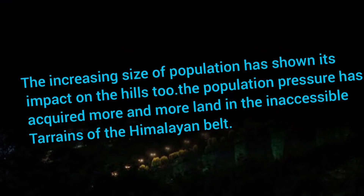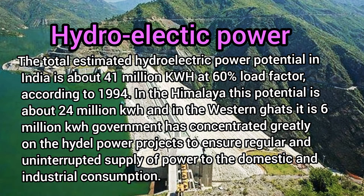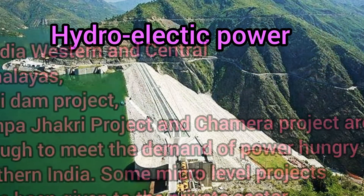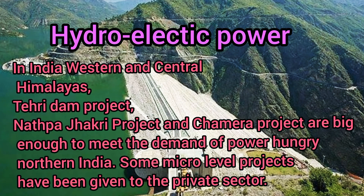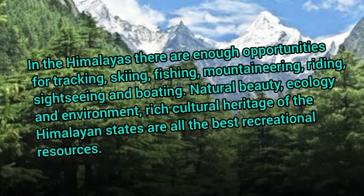The increasing population has shown its impact on the hills, acquiring more and more land in the inaccessible terrain of the Himalaya. In India, the total hydroelectric power potential is 41,000 million kWh, of which 24,000 million kWh is in the Himalayas and 6,000 million kWh in the Western Ghats. The government has concentrated greatly on hydel power projects. In the western and central Himalayas, the Tehri Dam project, Natpa Jhakri project and Chamira project are key projects to meet the power demand of north India.